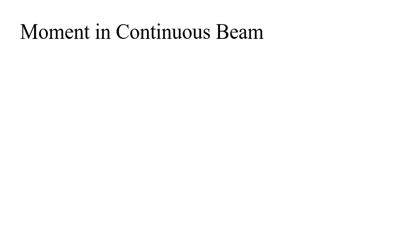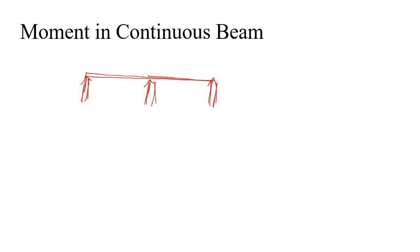Before talking about the foundation beam used in strip foundation, I would like to recap the concept of any continuous beam. So let's say this is a continuous beam with one support, another support, and another support. This beam can be any roof beam and these supports are nothing but columns. You are applying some load — maybe a point load, a UDL, or any type of loading.